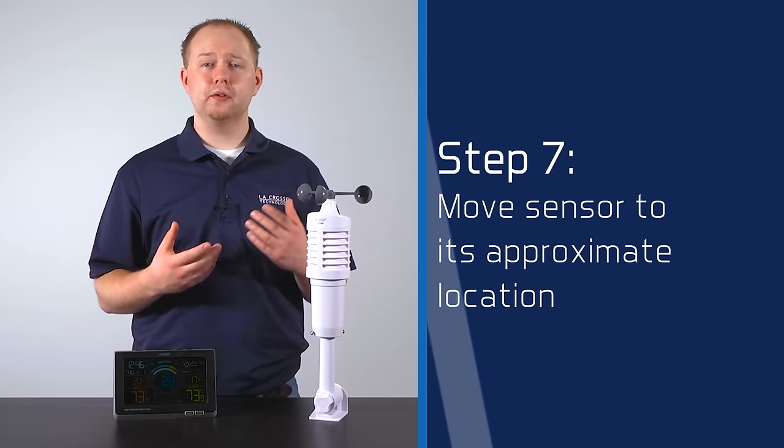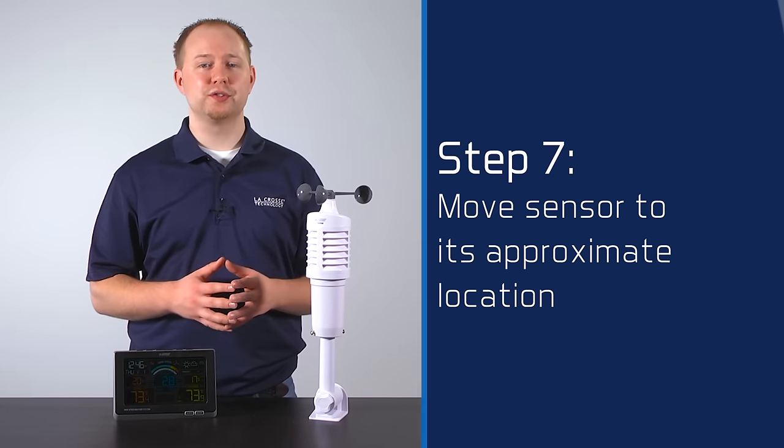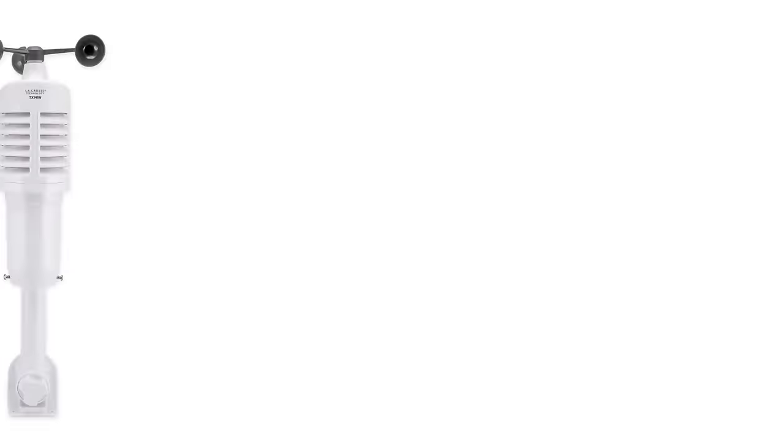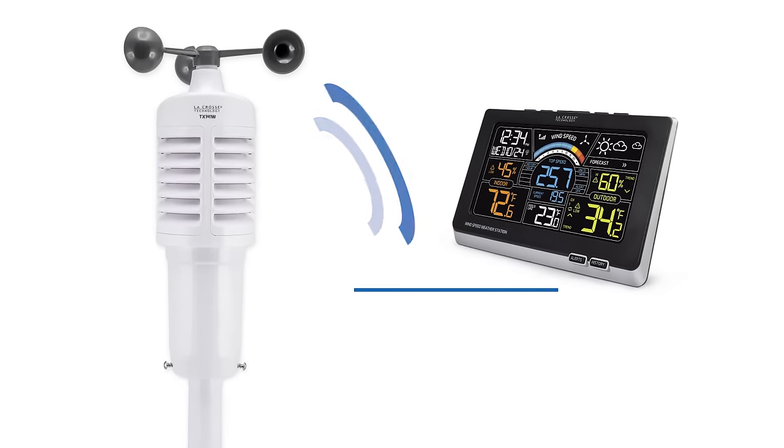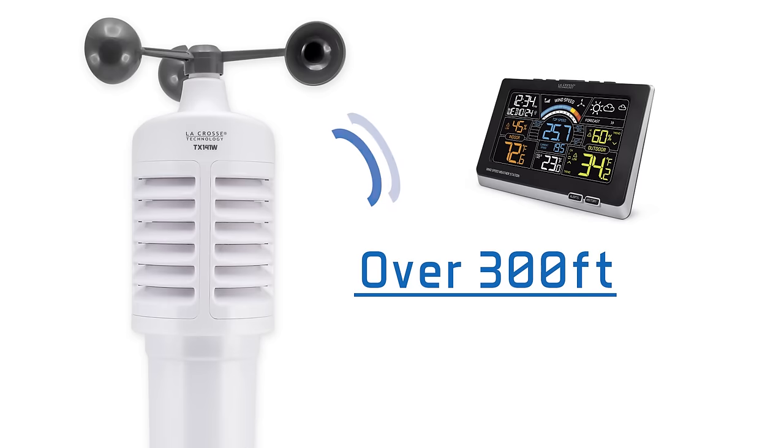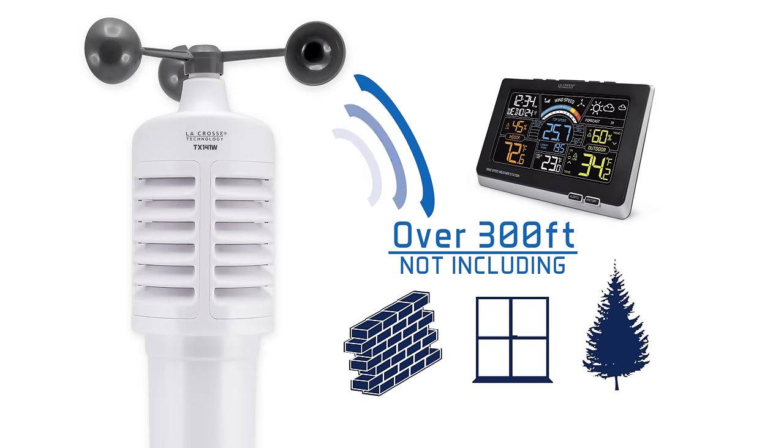Step 7. After the 15 minute wait with the sensor connected to your station, you should be ready to move it to its approximate permanent location. Keeping in mind, the maximum transmission range from this sensor to your station is over 300 feet in open air. This does not include walls, windows, trees, or any other objects that may cause interference.